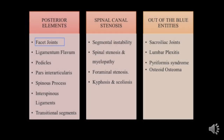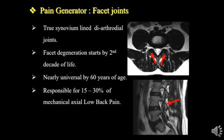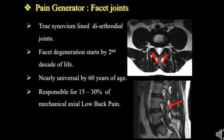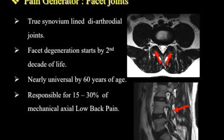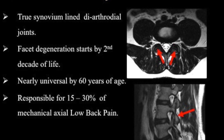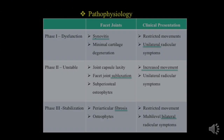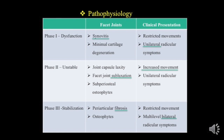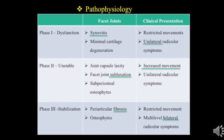Facet joints are true synovium-lined diarthrodial joints and they start degenerating very early in life — almost by the second decade — and universally by 60 years of age we can see degeneration in almost all patients. They are responsible for 15 to 30% of mechanical axial low back pain. The natural course of degeneration takes place in three phases: dysfunction, instability, and stabilization with fibrosis.